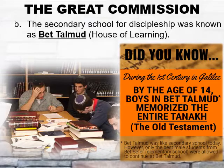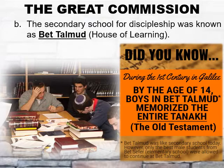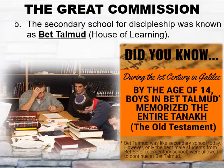The secondary school for discipleship was known as Bet-Talmud, or House of Learning. After Bet-Sephir, some select boys would continue their education at this institute until they were fifteen years of age. While there, they would study and memorize the rest of the Old Testament, as well as learn their family trade, since even most rabbis had another job that would earn them income.